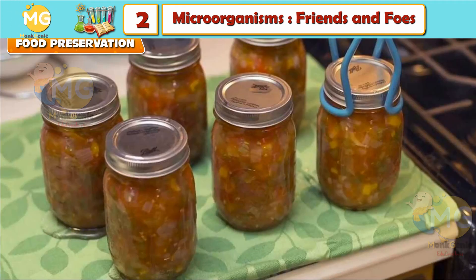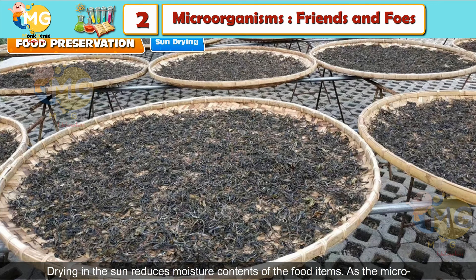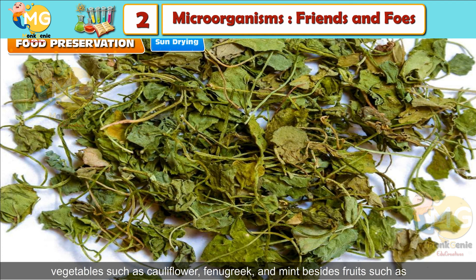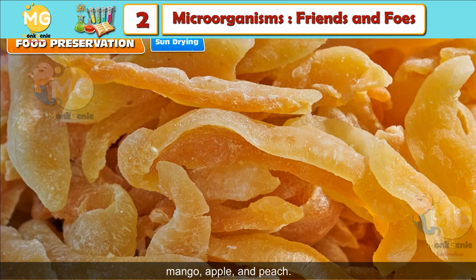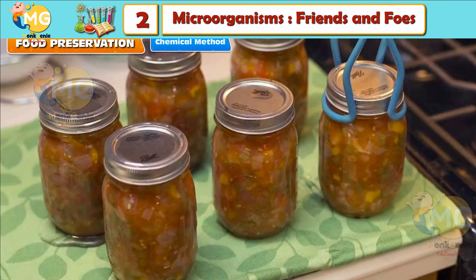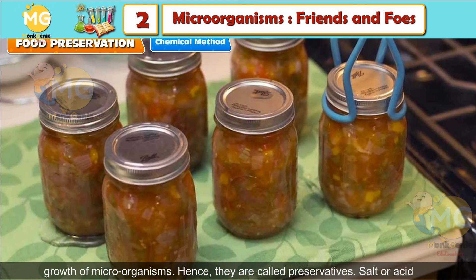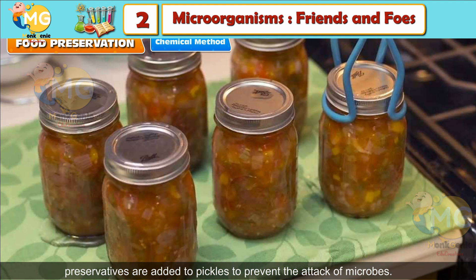Food Preservation — Sun Drying: Drying in the sun reduces the moisture content of food items. As microorganisms do not grow in dry conditions, it becomes easy to store dried vegetables such as cauliflower, fenugreek and mint, as well as fruits such as mango, apple and peach. Chemical Method: Salts and edible oils are common chemicals used to check the growth of microorganisms. Hence, they are called preservatives. Salt or acid preservatives are added to pickles to prevent the attack of microbes.